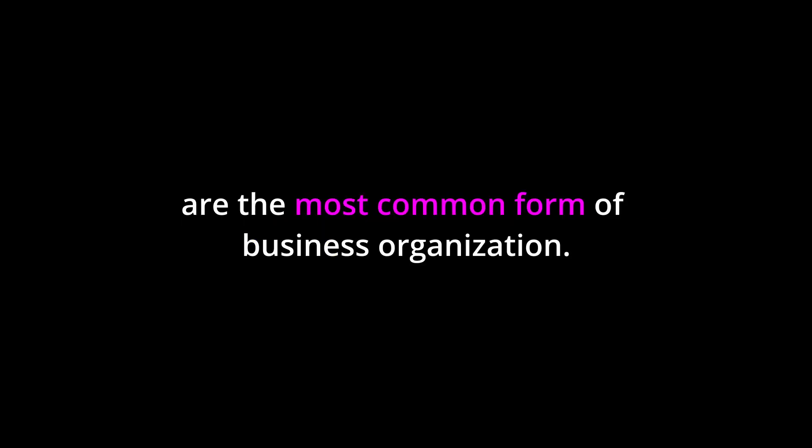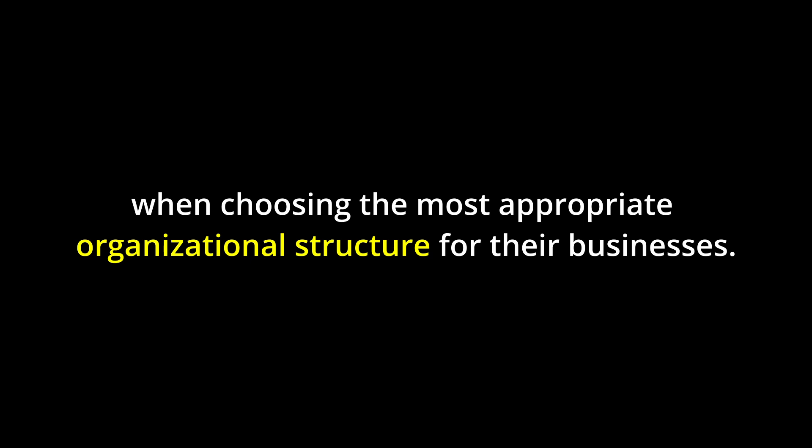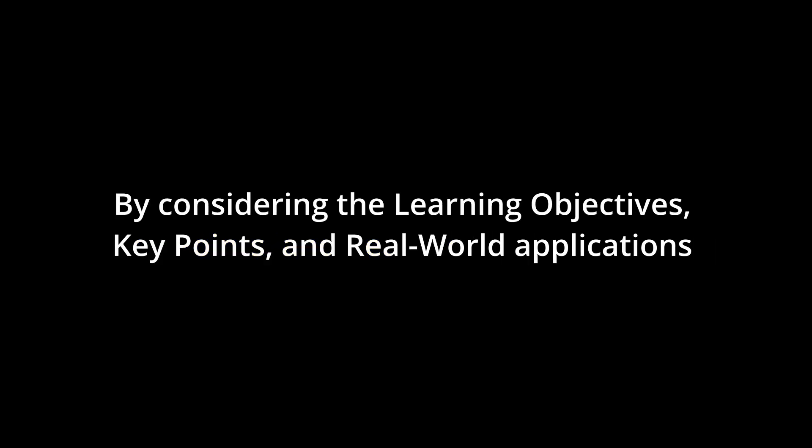Conclusion. Corporate structure and governance play a crucial role in the success of businesses. Different business structures offer various advantages and disadvantages, such as liability protection, tax implications, and ease of raising capital. Corporations, with their separate legal entity status and limited liability for stockholders, are the most common form of business organization. However, smaller businesses may benefit from the tax advantages and flexibility offered by S-corporations, LLCs, and LLPs. Understanding these concepts can help entrepreneurs make informed decisions when choosing the most appropriate organizational structure for their businesses. By considering the learning objectives, key points, and real-world applications discussed in this chapter, you can develop a solid foundation in corporate structure and governance, enabling you to navigate the complexities of business ownership and management successfully.